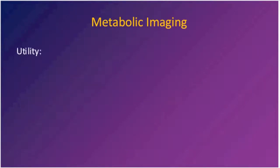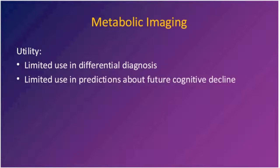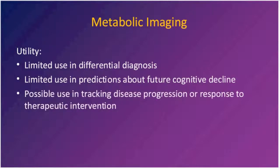There is limited use of metabolic imaging in differential diagnosis and in making predictions about future cognitive decline. On the other hand, in a drug study, if you have a drug supposed to treat Alzheimer's disease, you might be able to track metabolic imaging over time — observing improved metabolism in the parietal lobes in response to a drug might be a useful marker to track.